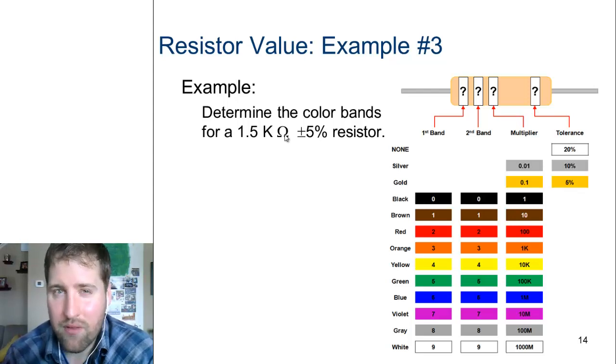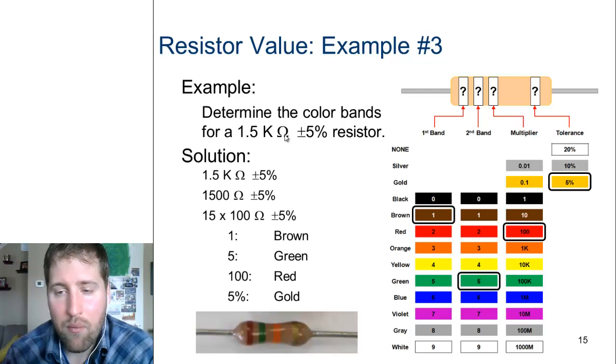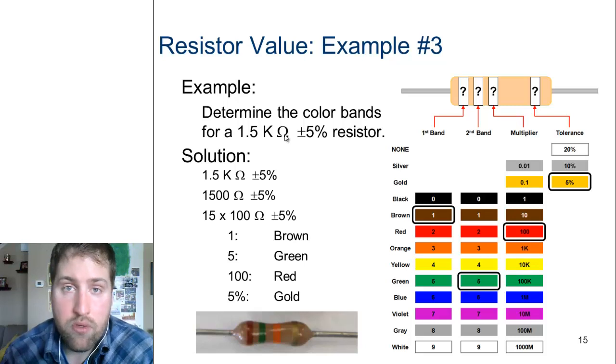And then our multiplier, just a little tricky here, would not be the 1k which a lot of people would say - that won't be orange, it'd be red, because we say 1 and 5 equal 15 times 100 to equal 1,500 ohms. We use that gold band to say there is a tolerance of 5%, or a little bit of wiggle room with the resistor too.